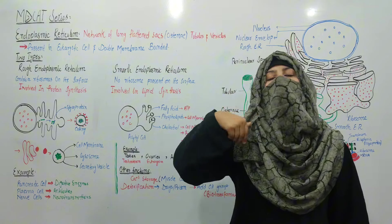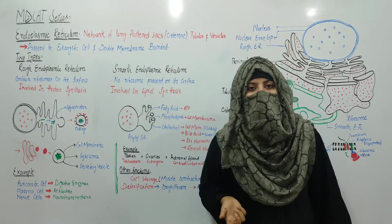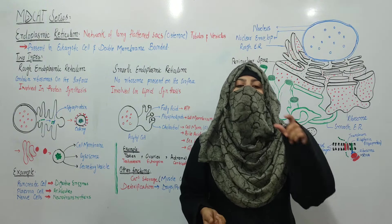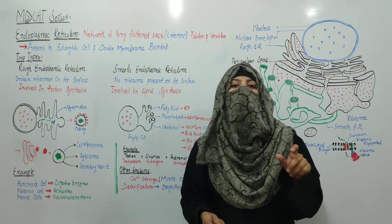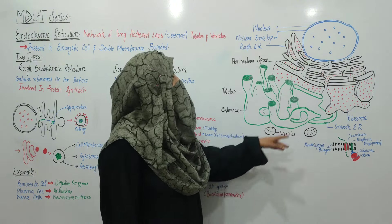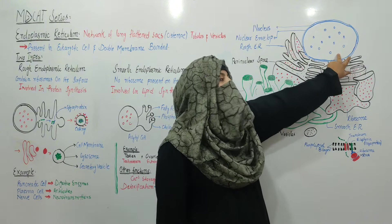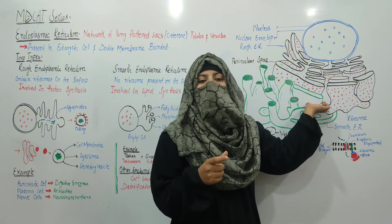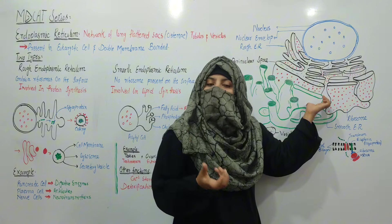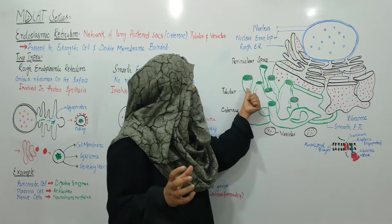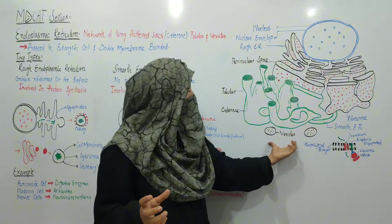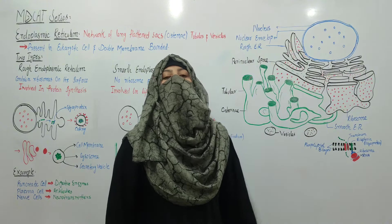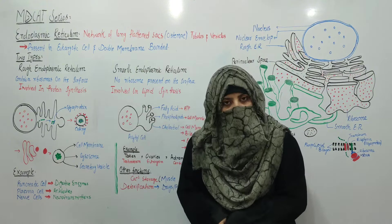The endoplasmic reticulum is a network of long flattened sacs called cisternae, tubules, and vesicles. This is an example of a diagram. With the nucleus you have flattened sacs or a box-like shape which is the endoplasmic reticulum. There are tubules also present, and vesicles also present. This is the endoplasmic reticulum channel network.